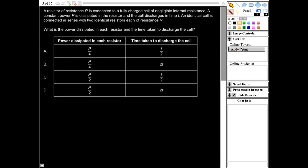So in the initial situation, we have our cell there, and this is our resistor R. Power is dissipated, which is P. Then what happens next? An identical cell is connected in series with two identical resistors, each with resistance R. And that's in time T as well for discharge. So in the second situation, we've got a situation like that, and we need to know what is the power compared to the first one in each resistor, and what is the time taken for the discharge?